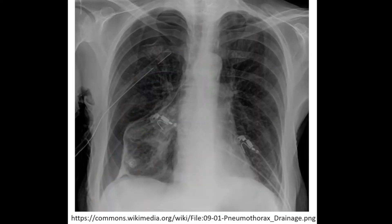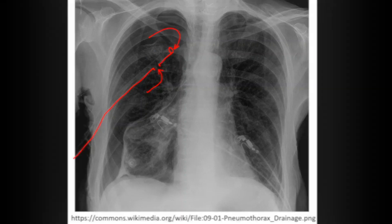Here you can see what a chest tube looks like on a radiograph. You can see the chest tube, and I'll outline the radio-opaque strip that goes down it. Notice there's a little gap — that's because there is a hole at the end and also a hole on the side, which allows air to go in from the tip but also from the side to be sucked out.